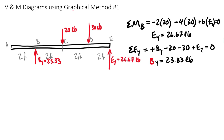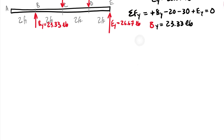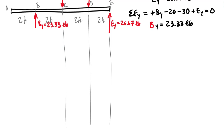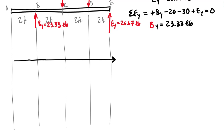Note that E_Y is bigger but not equal to 30 pounds — so that initial assumption would have been wrong. Now I'll draw the shear and moment diagrams directly below the true loading diagram. From A to B there is no load, so shear equals zero. At point B we have an upward force, giving a jump upward to 23.33 pounds.